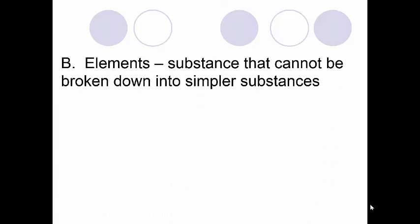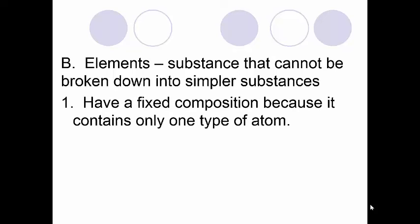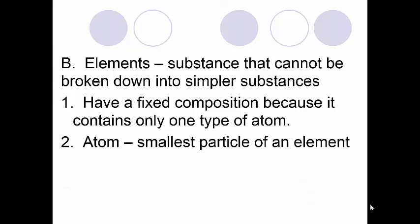So if we look at elements and compounds, an element is a substance that can't be broken down. It is already as small as it can be. You can't break it apart into anything else. So they have a fixed composition. It never changes. Oxygen, for example, is oxygen. It doesn't change into something else. It's always oxygen. And the atom is the smallest particle of an element. So you have oxygen atoms and you have nitrogen atoms, magnesium atoms. Every single element has a different atom, different amounts of protons and neutrons and so on.